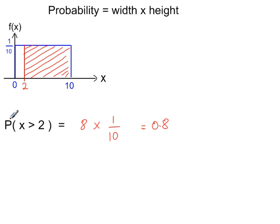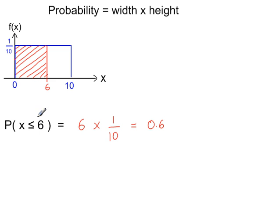In this example, we're looking for the probability that x is greater than 2 — this is the shaded region. It has a width of 8 and a height of 1 tenth, so multiply them to get the probability. In the next example, P(x ≤ 6): a width of 6, a height of 1 tenth, gives probability 0.6.